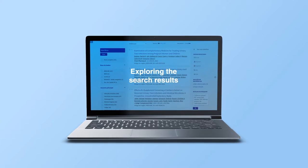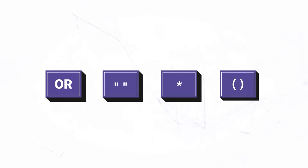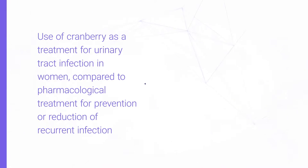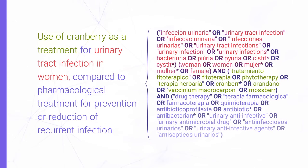Exploring the search results. Now that we know how to build a search expression, let's explore and browse the results. Let's start with the topic already worked on: use of cranberry as a treatment for urinary tract infection in women compared to pharmacological treatment for prevention or reduction of recurrent infection.